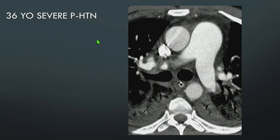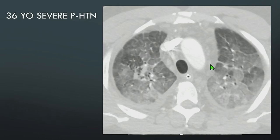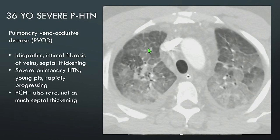Some rare causes: a 36-year-old with severe pulmonary hypertension shows a main pulmonary artery larger than the ascending aorta on CT — a good sign of pulmonary hypertension — with ground glass and subtle smooth interlobular septal thickening on lung windows. This patient did not improve with diuresis, and biopsy revealed pulmonary venoocclusive disease — a rare condition of idiopathic intimal fibrosis of veins leading to septal thickening. Consider this when a young patient has severe worsening pulmonary hypertension. A closely associated condition is pulmonary capillary hemangiomatosis, which more often presents with centrilobular ground glass but can also show septal thickening.